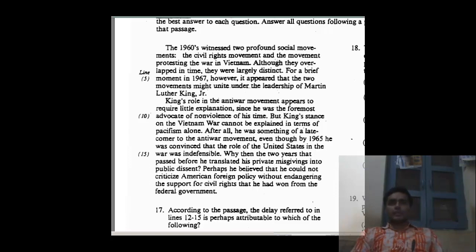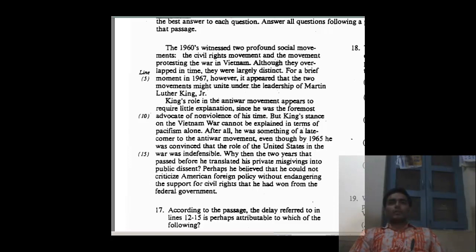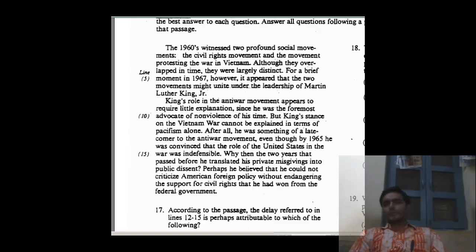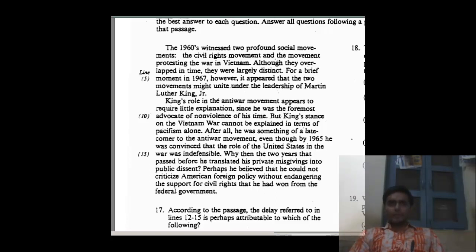King's role in the anti-war movement appears to require little explanation since he was the foremost advocate of non-violence of his time. We know that King greatly respected Mahatma Gandhi and read the theory of ahimsa, which means non-violence. But King's stance on the Vietnam War cannot be explained in terms of pacifism alone. "But" is a trigger — it changes direction, indicating that non-violence cannot explain his position alone.